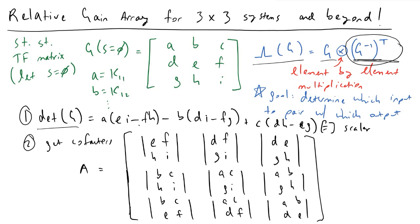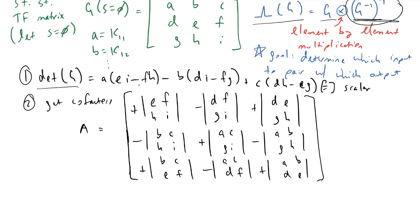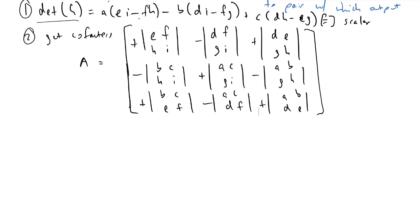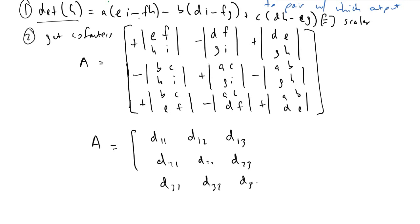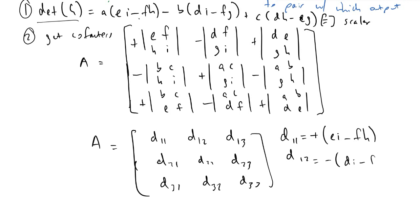The next thing we're going to do is apply the sign pattern: plus, minus, plus, minus, plus, minus, plus, minus, plus. An important note is that determinants are scalar quantities. So matrix A is really just composed of scalar determinant values: D11, D12, D13, D21, D22, D23, D31, D32, D33. To elaborate, D11 is equal to plus (EI minus FH), and so on for each element.